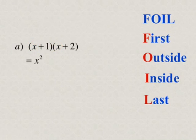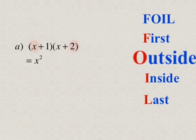Next, we're going to multiply the outside terms of the two binomials. That's going to be our x and our plus 2. x times 2 is positive 2x, so we write plus 2x.